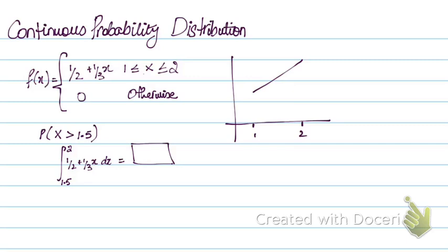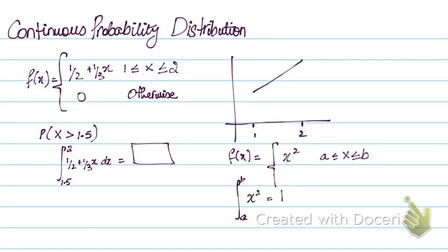This is how you calculate probabilities for a continuous random variable. An important property: if f(x) equals any function — say x squared — defined from a to b, then integrating it from a to b must equal 1, because the total probability always sums to 1. This is how you find any unknown constants associated with the function.